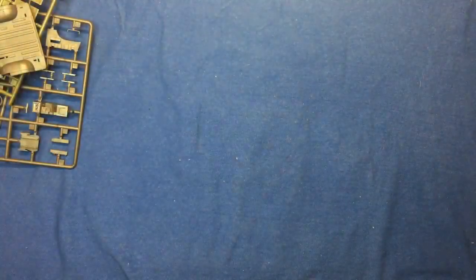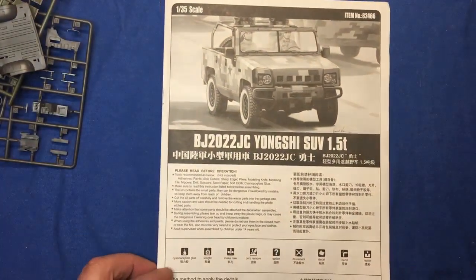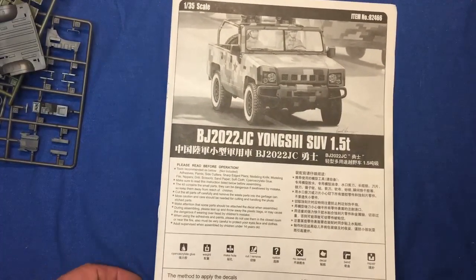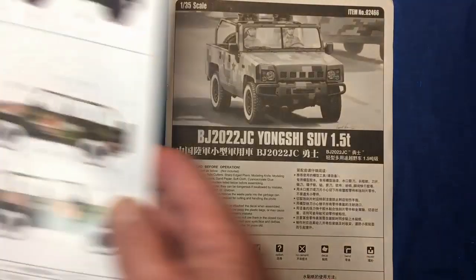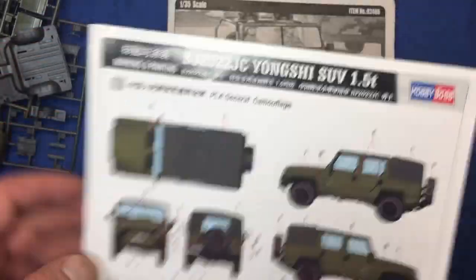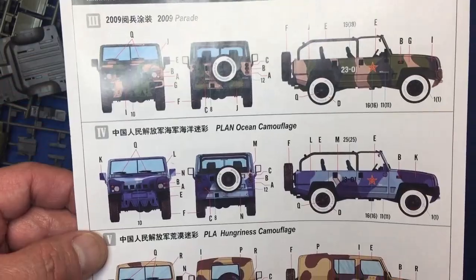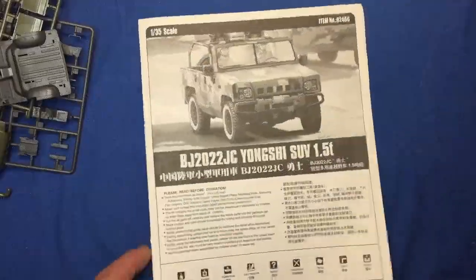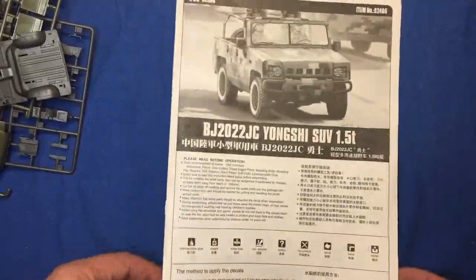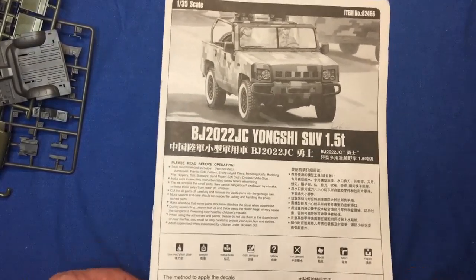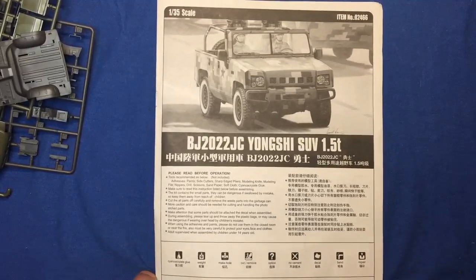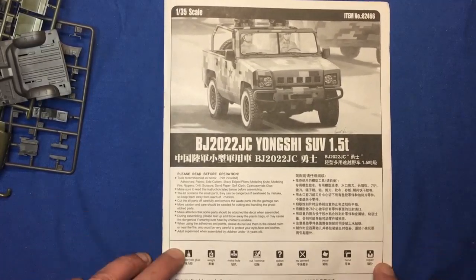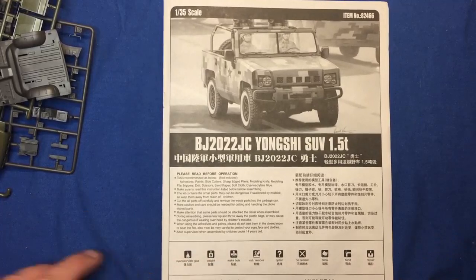But there we have it, guys. That is the BJ-2022 JC Yongxi SUV 1.5 tonne. It's a lovely little kit and out there for a bargain price. And also with all the different color schemes available, you can see on here, it'd be a fantastic little practice in for your airbrushing and your masking, especially this one here. Which is, if I do it, this is what I fancy doing. So there we go, guys. Thanks for watching. Give me a like if you like it. Give me a dislike if you don't. But please tell me why. So I'll see you all soon.